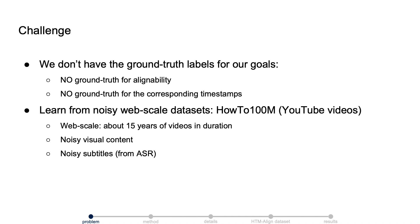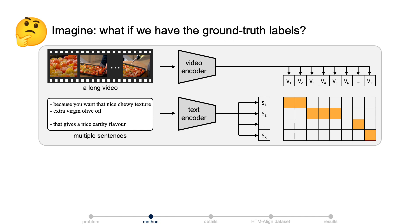These uncurated videos have substantial noises from both the visual side and the texture side. Before explaining our method, let's imagine what if we have the ground truth labels. Given a long video and the list of sentences as input, we can first extract the visual and textual features.